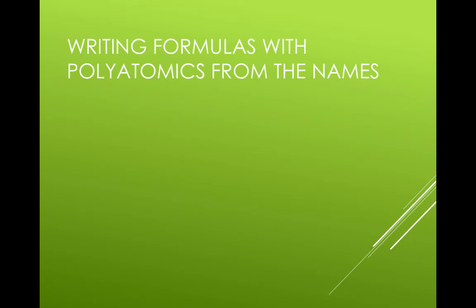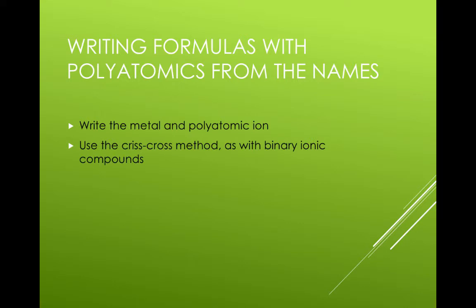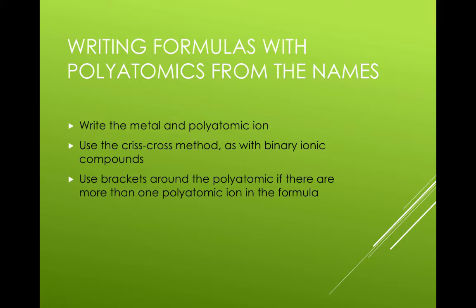Writing formulas with polyatomics from the formula names: Write the metal ion and the polyatomic ion. Crisscross as you do with binary ionic compounds. Use brackets around the polyatomic if you need more than one of the polyatomic group. For example, lithium carbonate.